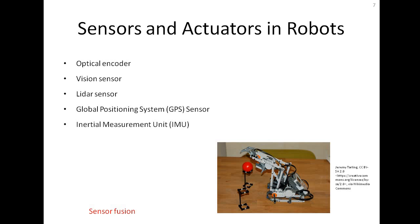The Inertial Measurement Unit (IMU) sensor consists of an accelerometer, gyroscope, and compass. It is used for pose estimation of the robot — measuring both position and orientation.